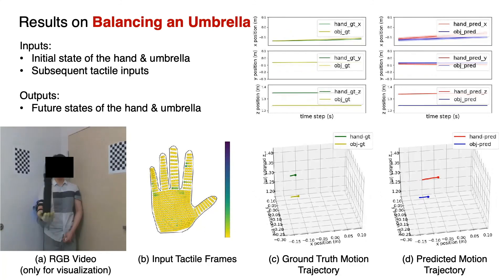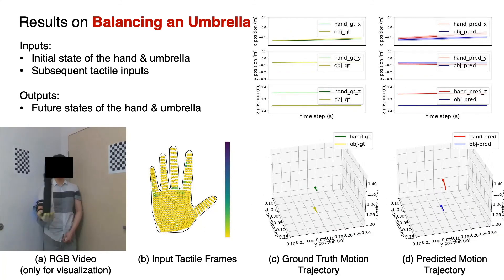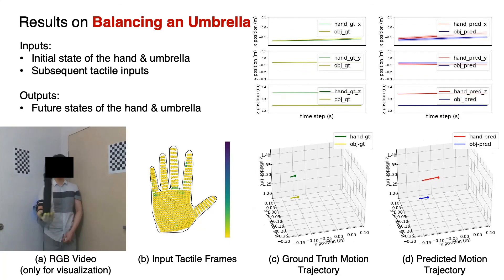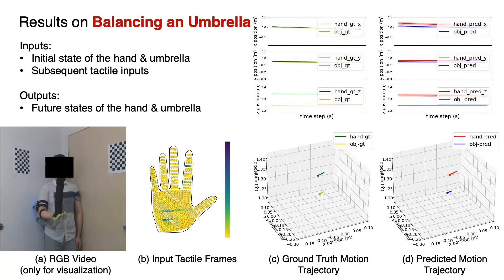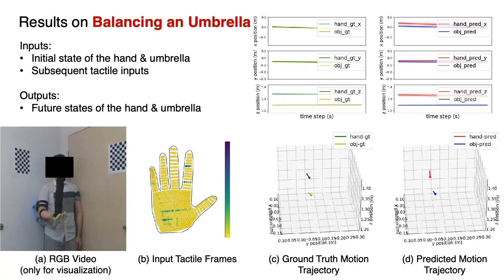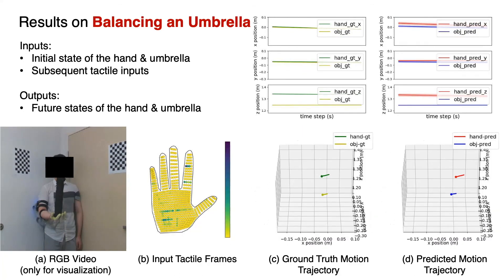Here we show the results on balancing an umbrella. The inputs to our model are the initial state of the hand and the middle point of the umbrella, and the subsequent tactile inputs. The outputs are the future states of the hand and the umbrella in 3D space.